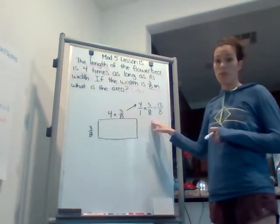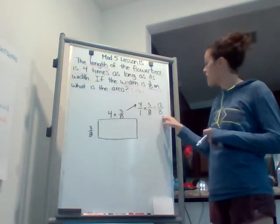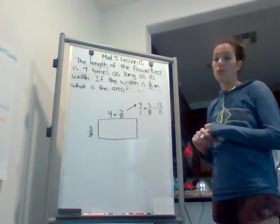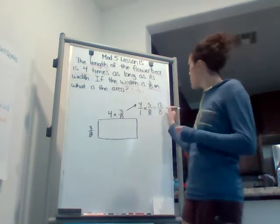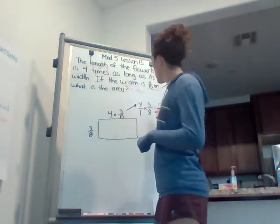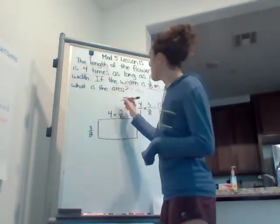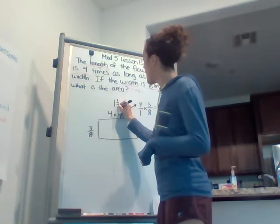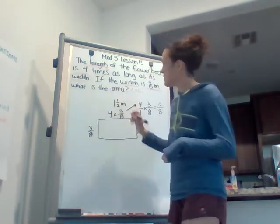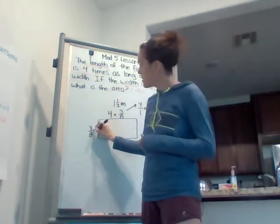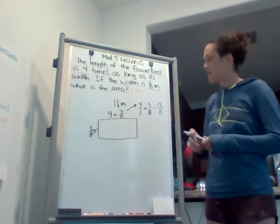So our measurement over here, our length is 12 over 8, which if we convert that back into a fraction, will be 1 and 4 eighths. 1 and 4 eighths is the same as 1 and 1 half, and we're using meters. So 1 and 1 half meters by 3 eighths meters.